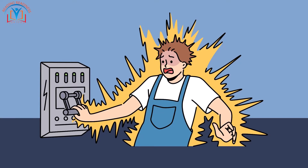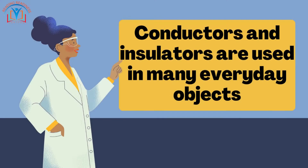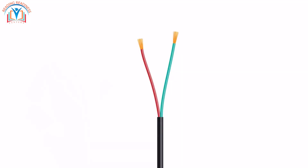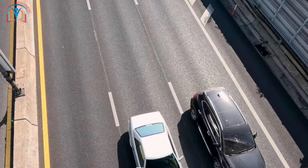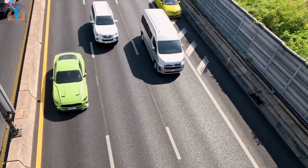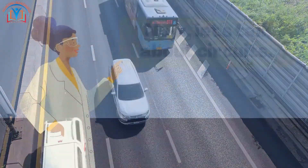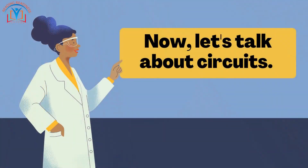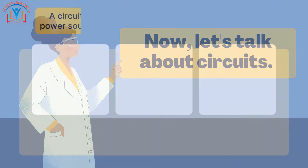Conductors and insulators are used in many everyday objects. For instance, the wires in your home are made of conductors, while the insulation on the wires is made of insulators. It's like having a road with guardrails to keep the cars from going off the edge. Now let's talk about circuits.